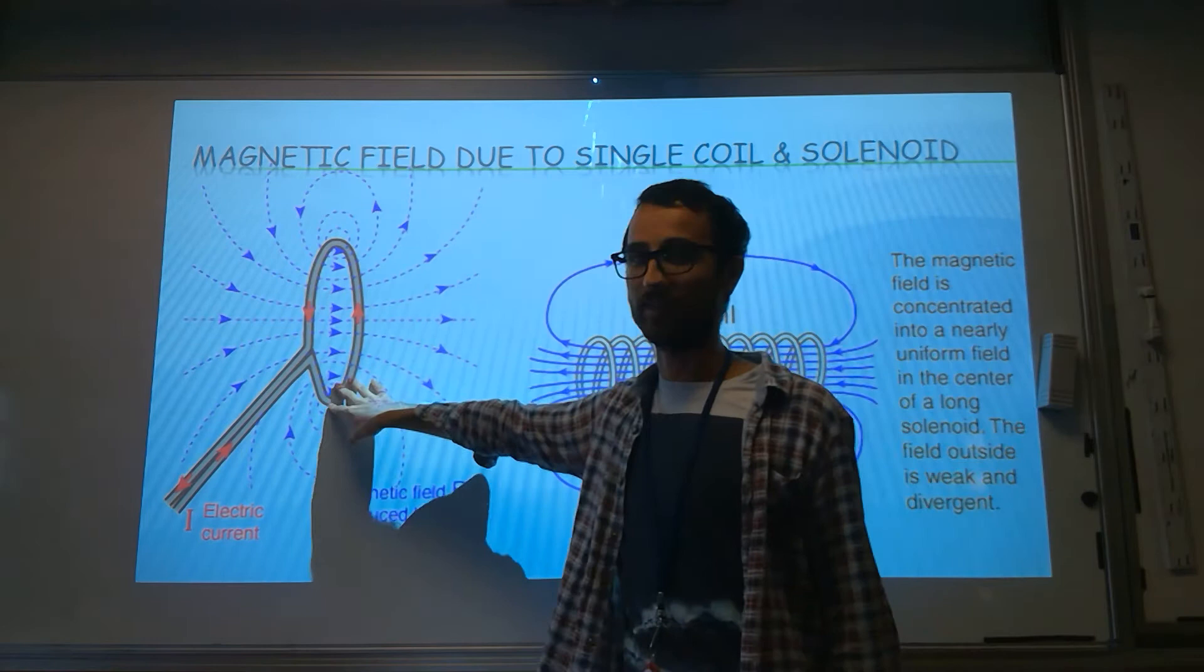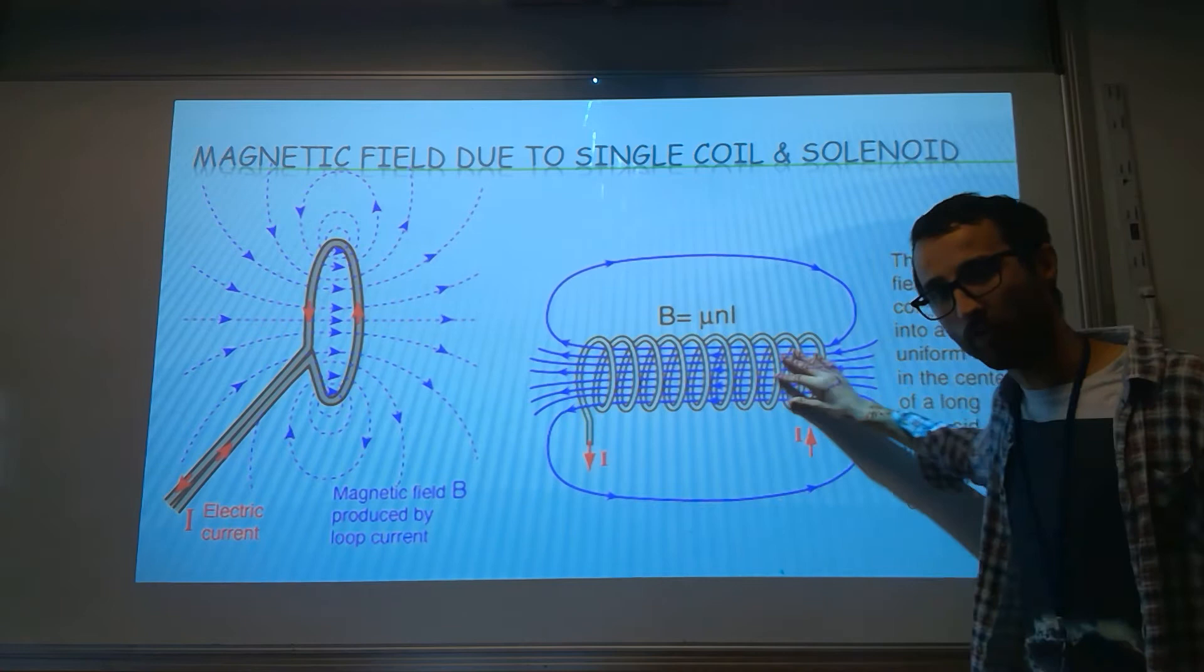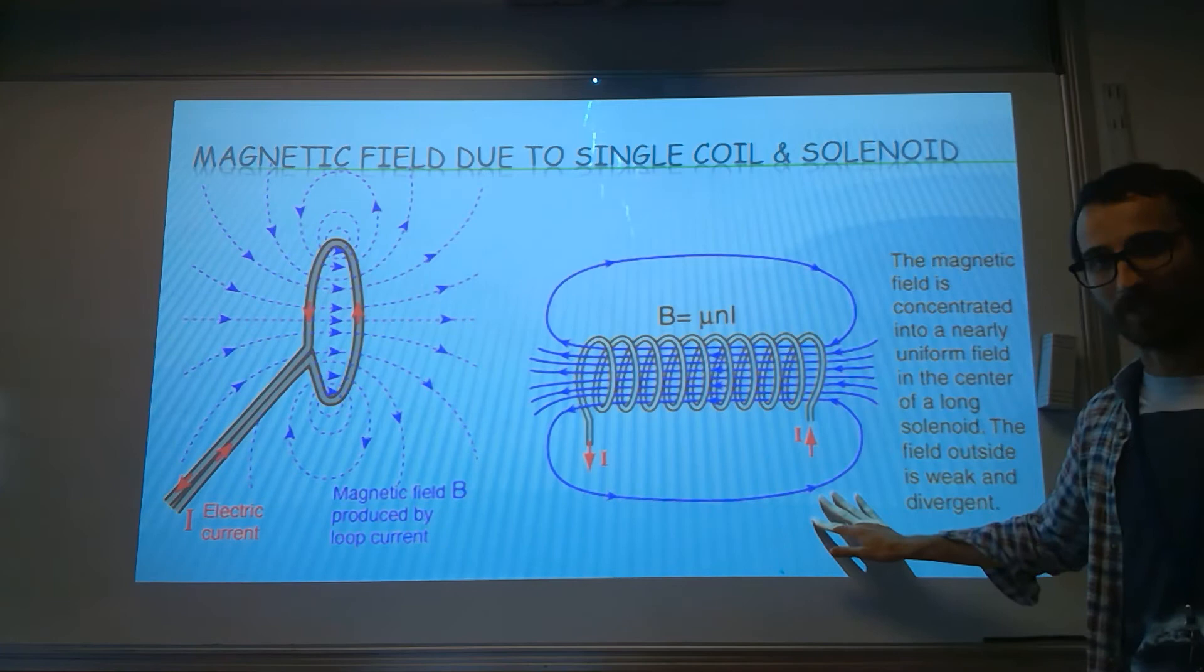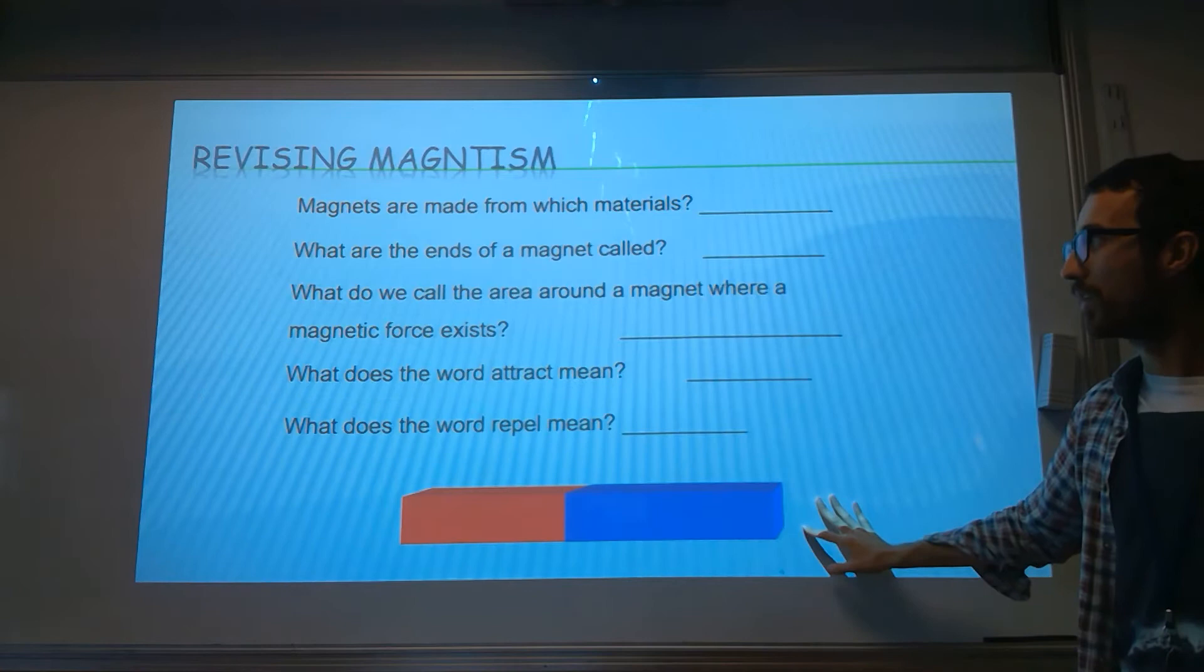This over here is a solenoid - it's just a coil of wire, so there's lots of these loops. And you can see if I put loads of these together, they start streaming out. We produce this lovely uniform field in the middle over here. Around the outside it looks a bit like a bar magnet. And here are some other gorgeous pictures for you to look at.